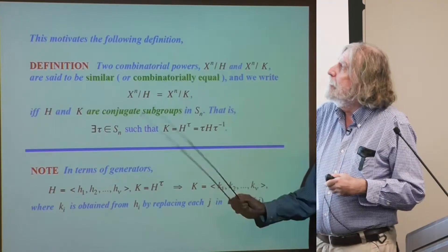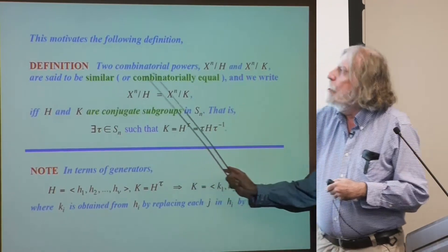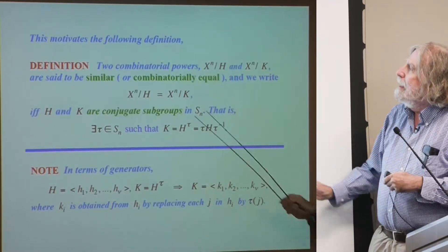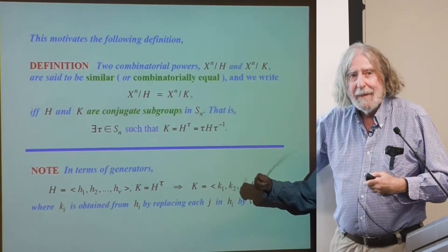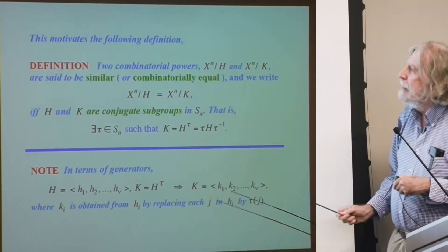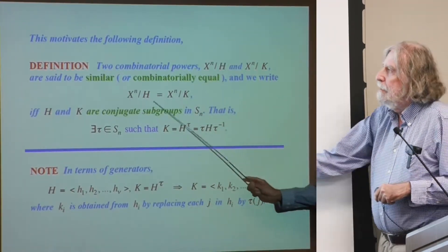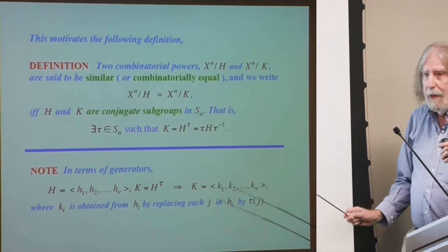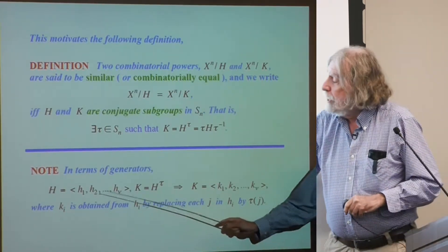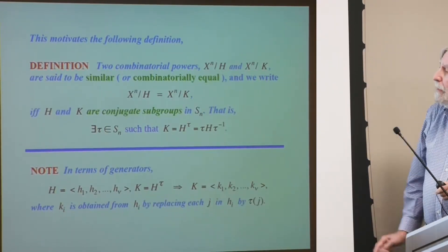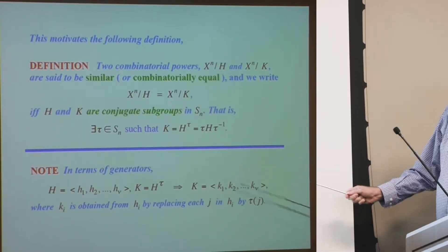This motivates the following definition. Two combinatorial powers are said to be similar, or combinatorially equal, if and only if H and K are conjugate subgroups. As soon as you have conjugate subgroups, the combinatorial powers are said to be equal. We will need to collect similar terms, so the word similar is important. In terms of generators, it is very easy to find the generators of the conjugate of H in a simple way.